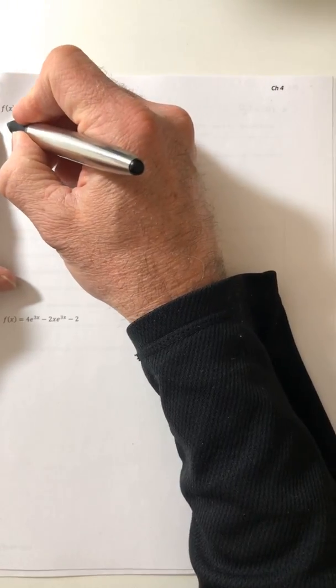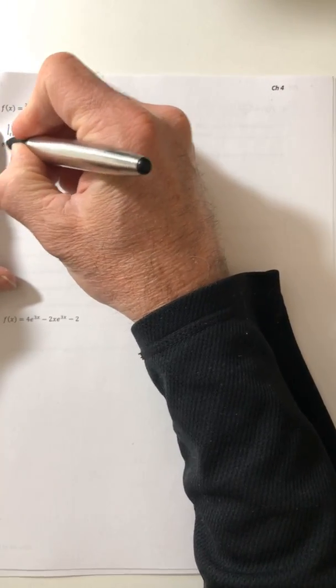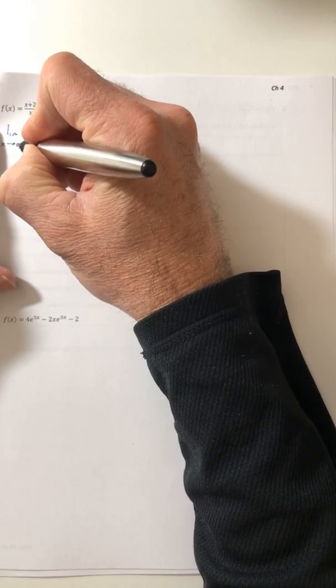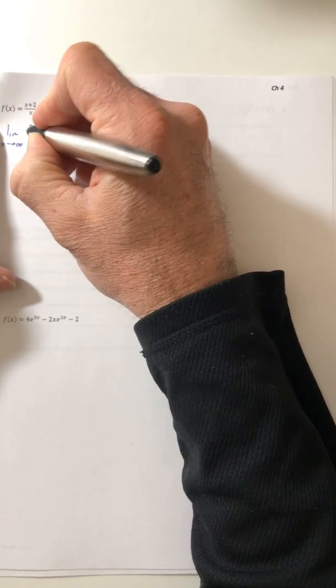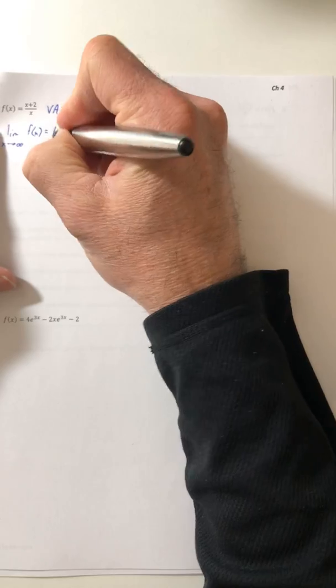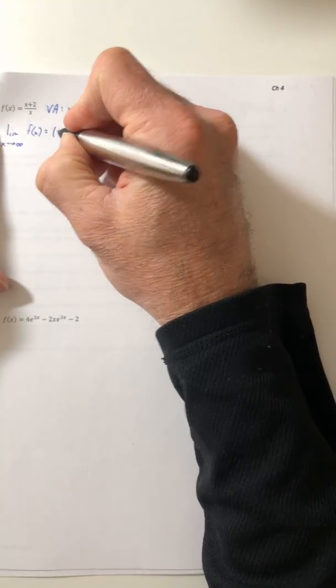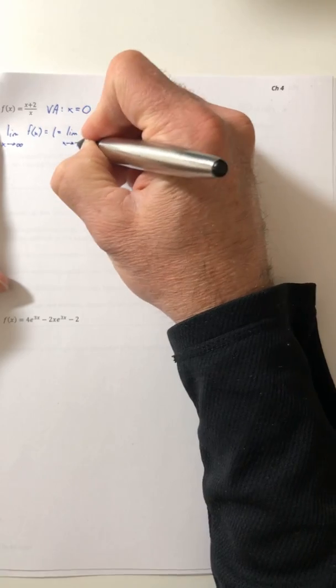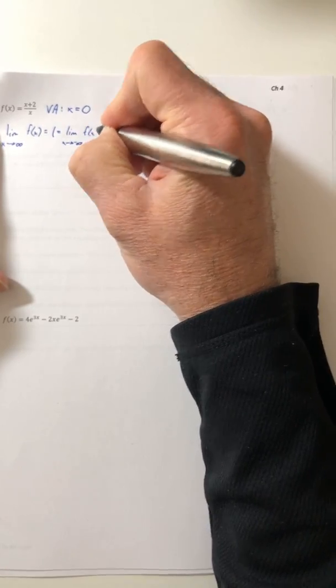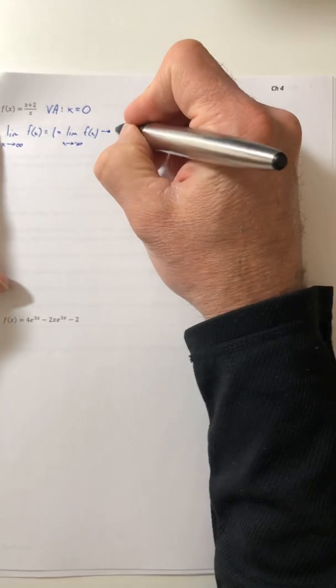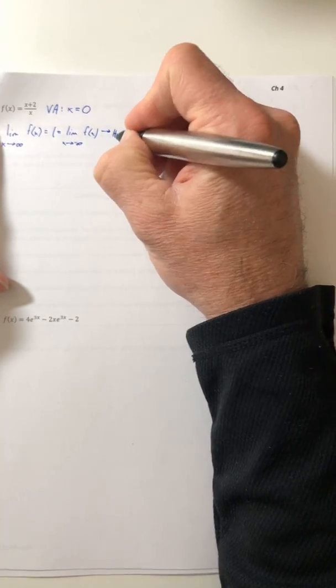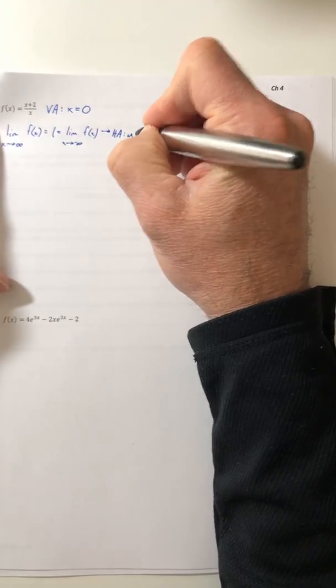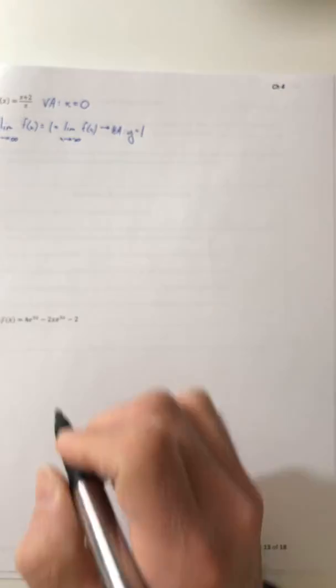If we took the limit as x goes to infinity of the function, we're going to get one and we get the same answer if we took the limit as x goes to negative infinity. So that means you have a horizontal asymptote at y equals one.